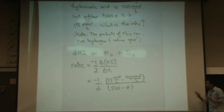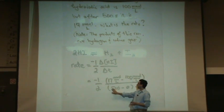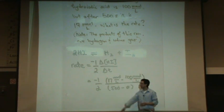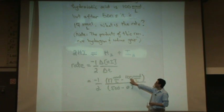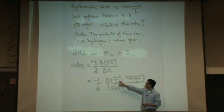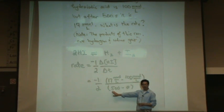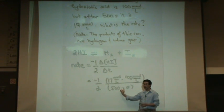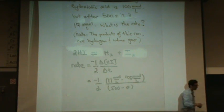Again, the order doesn't matter, but the numbers have to match. So the 500 must go with the 17. The 0 must go with the 100, because that's the starting point. 17 is the ending point after 500 seconds. I could have flipped the bottom, and if I did, I would have to flip the top. So those things go together.